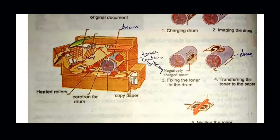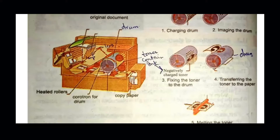This is the aluminum cylinder with selenium coating. You also have a lamp and a lens to focus light on the cylinder. Here are the toner dots. You have a toner — dry ink. The original document page we want to copy is removed from the side of the heated roller. This is the construction of the photocopier; now we discuss how it works.